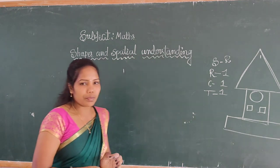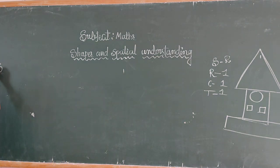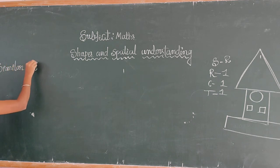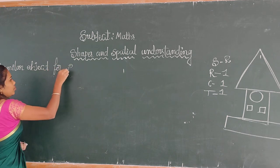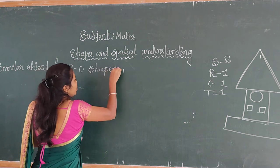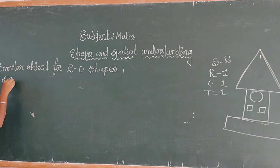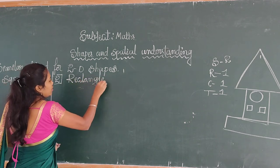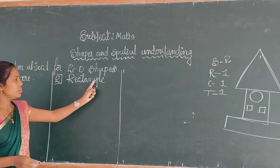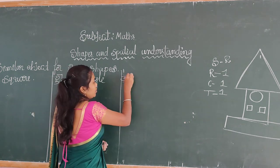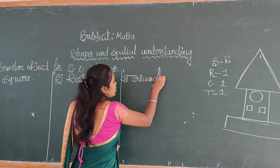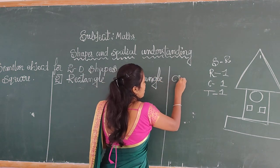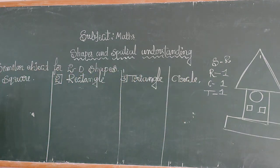Okay dear students, similar objects for 2D shapes. The first one is square, S-Q-U-A-R-E. The second one is rectangle. The third one is triangle. The fourth one is circle. Let's draw the shapes: square, rectangle, triangle, and circle. This is a square shape, this is a rectangle shape, this is a triangle, and this is a circle.